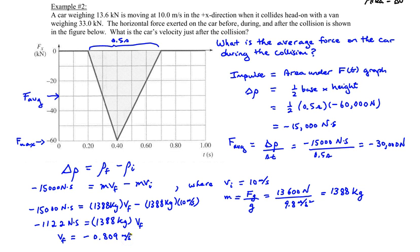This means the car rebounds backwards at 0.809 meters per second in the left, or negative x, direction. Note that we didn't use the mass of the van — this was the impulse on the car, which is the same magnitude as the impulse on the van. If we knew the van's initial velocity, we could find its final velocity as well, but that information wasn't given. And that's it for this example.